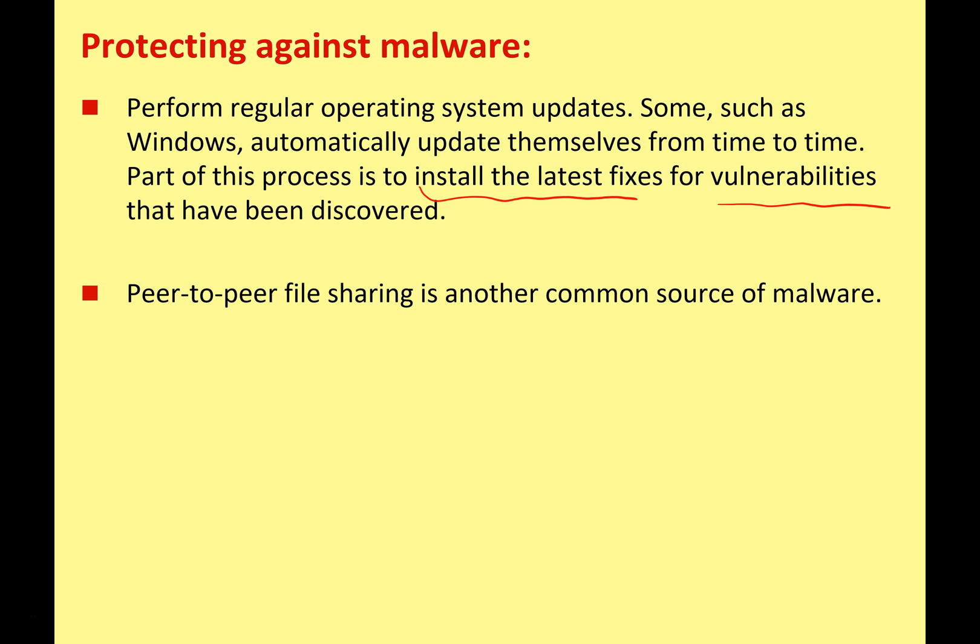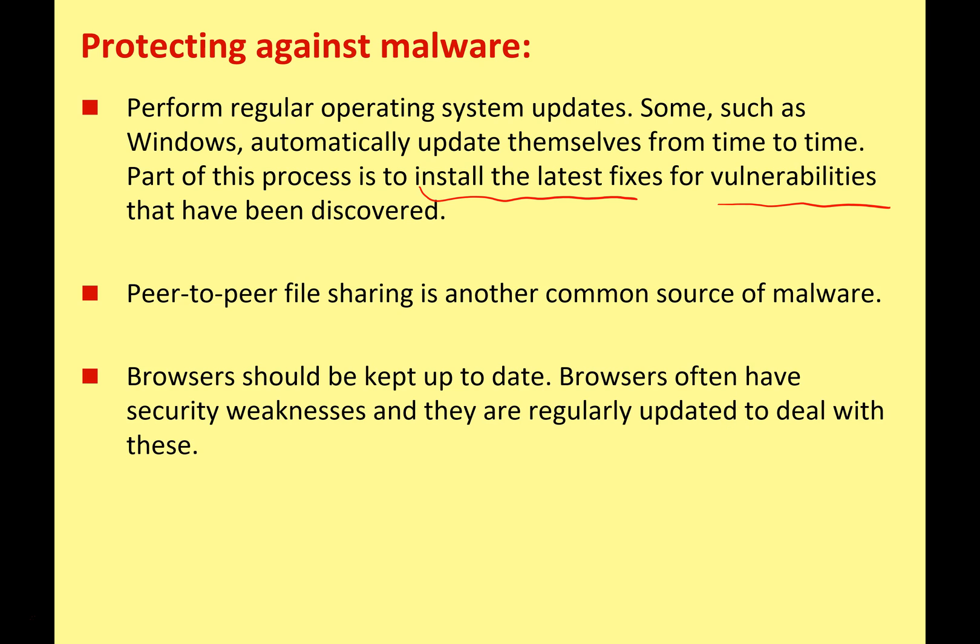Peer-to-peer file sharing is another common source of malicious software. If you're downloading free movies or free games from BitTorrent, these files need to be scanned carefully, as this is a common way of spreading bad programs throughout the world. You also have to keep your browser up to date — whether you're using Firefox, Chrome, Microsoft Edge, or anything else — because older browsers have security weaknesses that need to be fixed to minimize the possibility of bad programs gaining access to your computer.